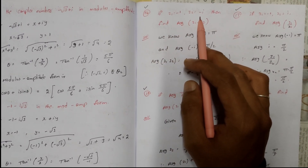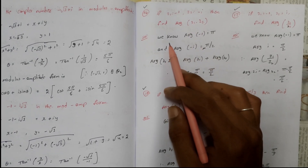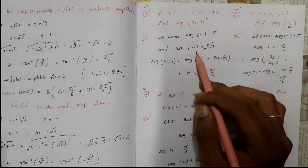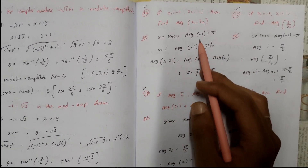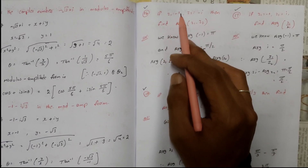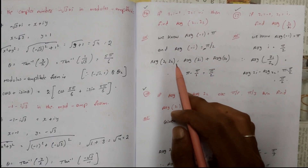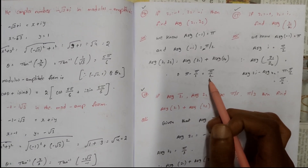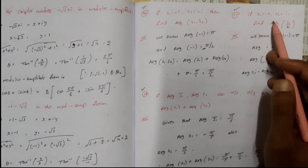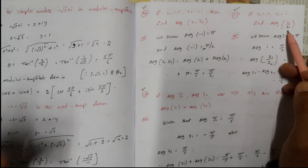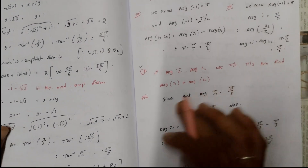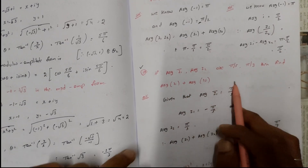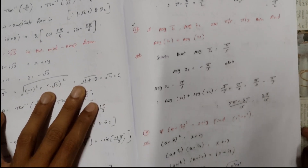If z₁=−1 and z₂=−i, find arg(z₁·z₂). We know arg(−1)=π and arg(−i)=−π/2. So arg(z₁·z₂) = arg(z₁) + arg(z₂) = π + (−π/2) = π/2. Similarly find arg(z₁/z₂). These problems have appeared in previous question papers multiple times.